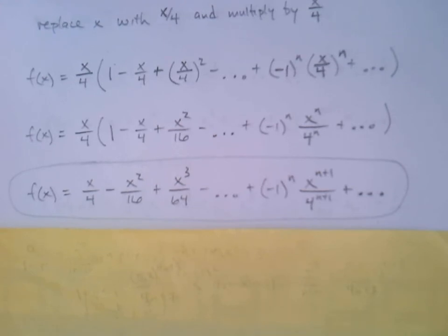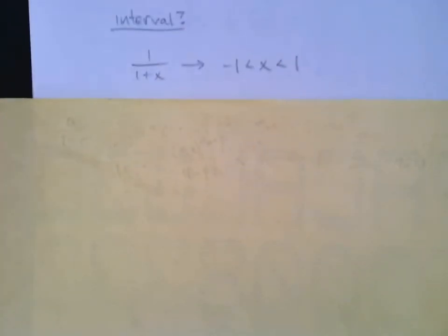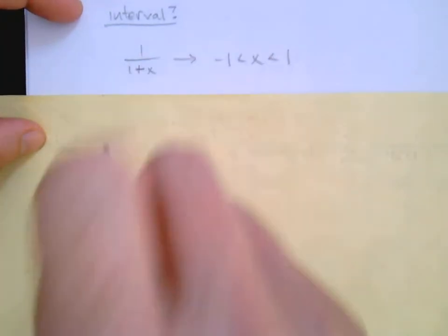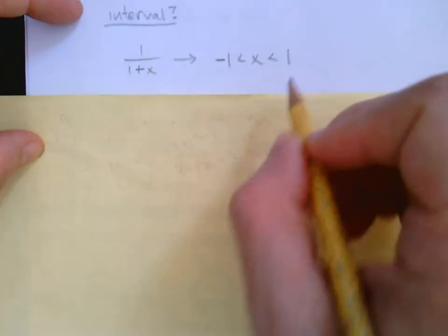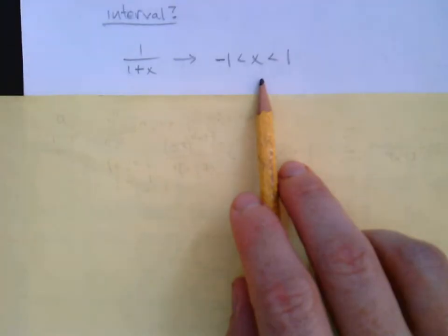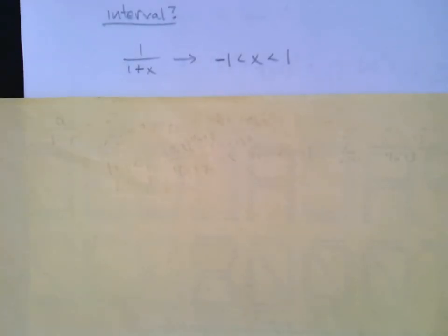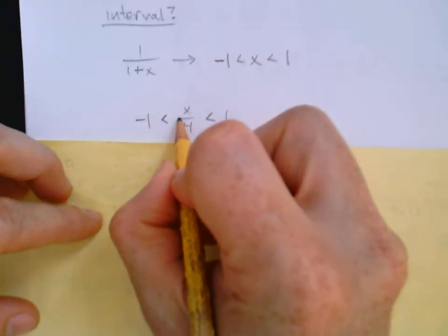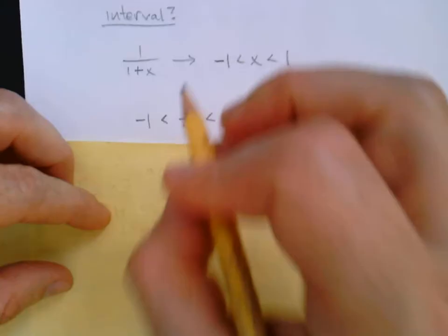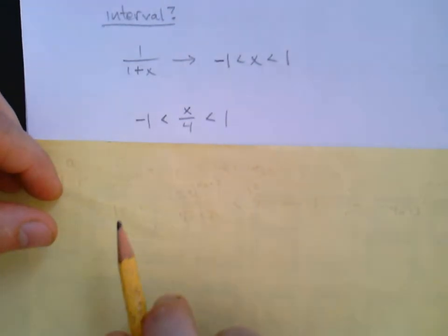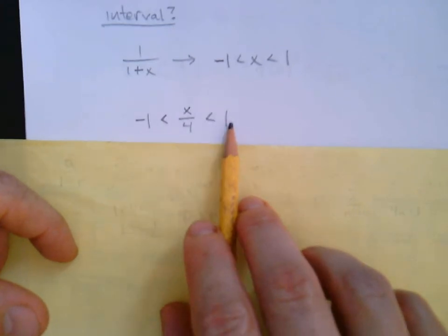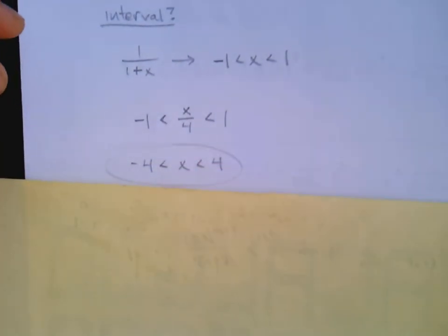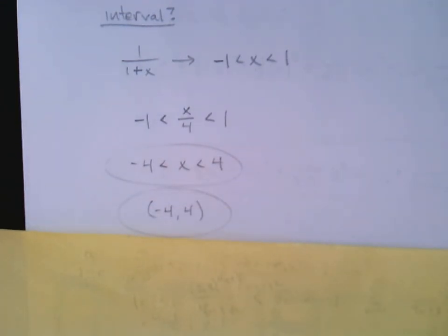Of course, we want the interval. The interval. So since we took advantage of 1 over 1 plus x, we look at that interval. It's from negative 1 to 1. And just like in the previous example, we're going to replace x with what we replaced it with in the series. So that was x over 4. But we can't stop here. We need to isolate x in the middle. If we're dividing by 4, then we want to multiply by 4. So multiply all of them by 4, and you'll get negative 4 less than x less than 4. Or you might just say the interval negative 4 to 4. There it is. Your interval of convergence.